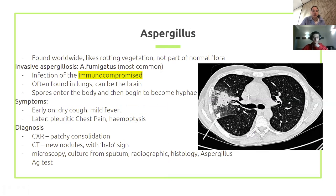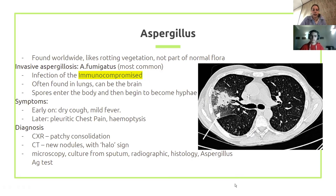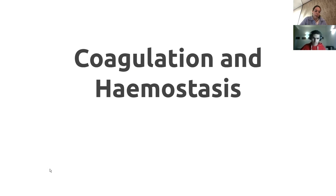Fourth is Aspergillus, found worldwide. When invasive, it infects the immunocompromised and typically forms abscess-like cysts in the lungs, though it can also affect the brain. Symptoms include chest pain, cough, and fever. Diagnosis is through chest X-ray showing patchy consolidation, and CT showing the classic halo sign. Microscopy and antigen testing are also used. Know these four invasive fungi well — they're high yield.